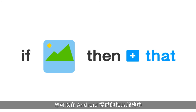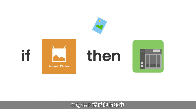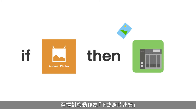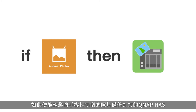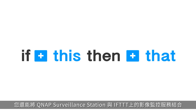For example, you can set the trigger on Android Photo Service as 'Any New Photo' and the action on QNAP Service as 'Download File from URL.' Then you can automatically back up all your new photos from your Android devices to the QNAP NAS.